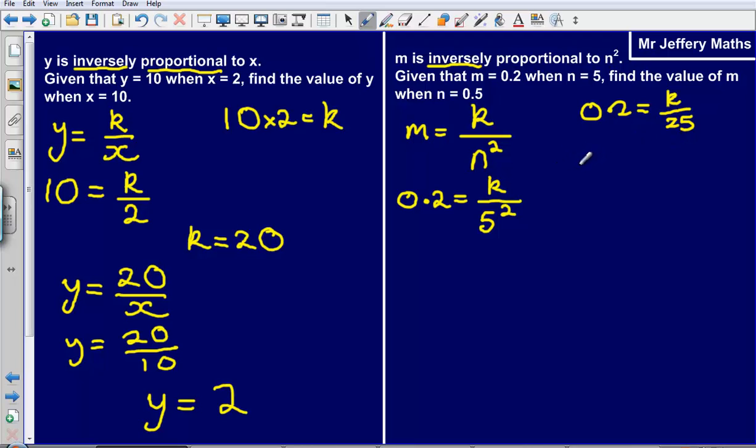So I could say that k is equal to 0.2 multiplied by 25. And so that gives me an answer of k must be equal to 5.